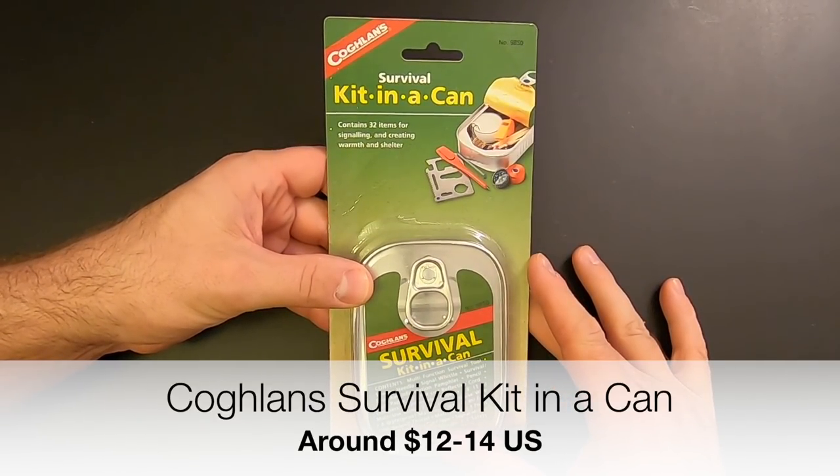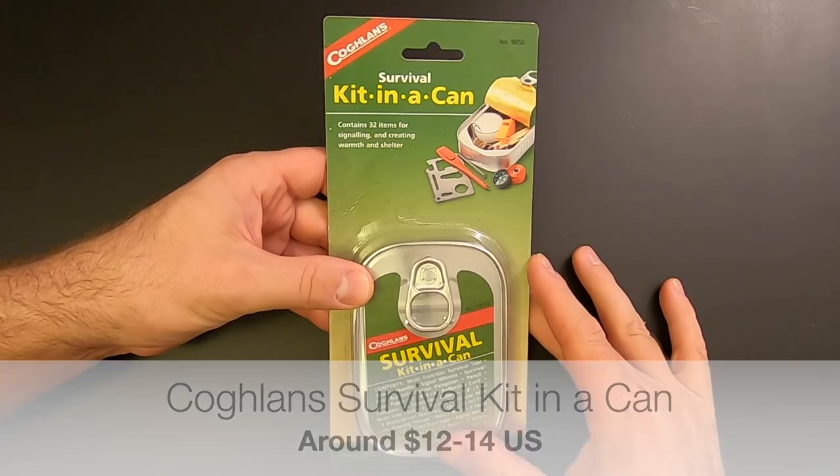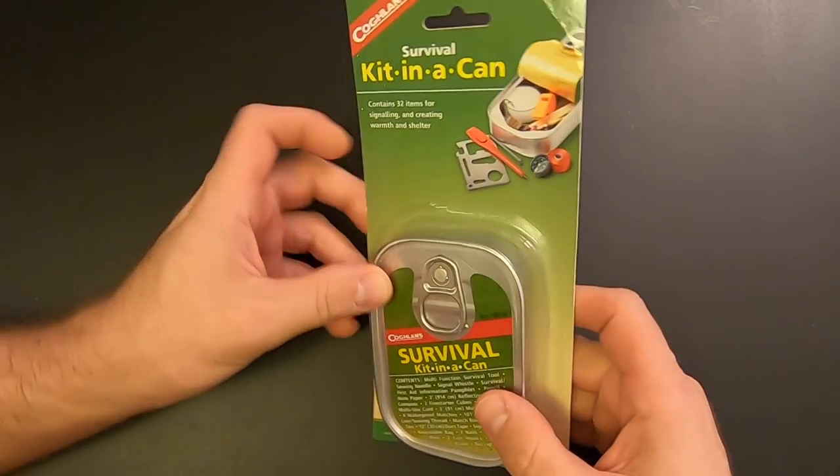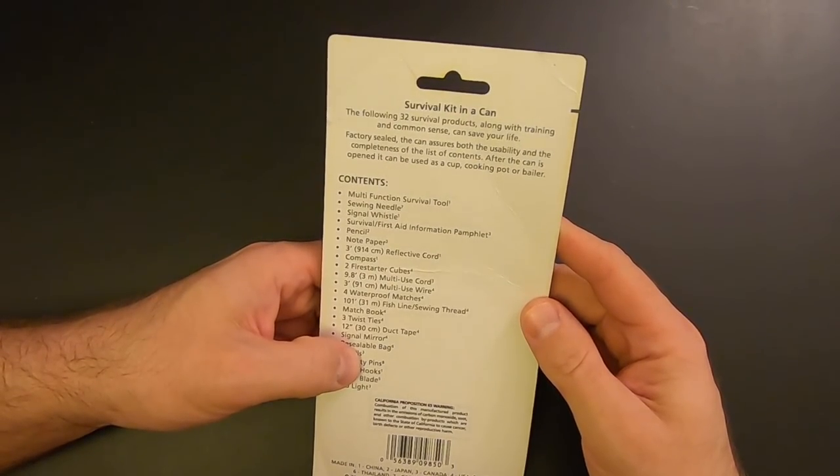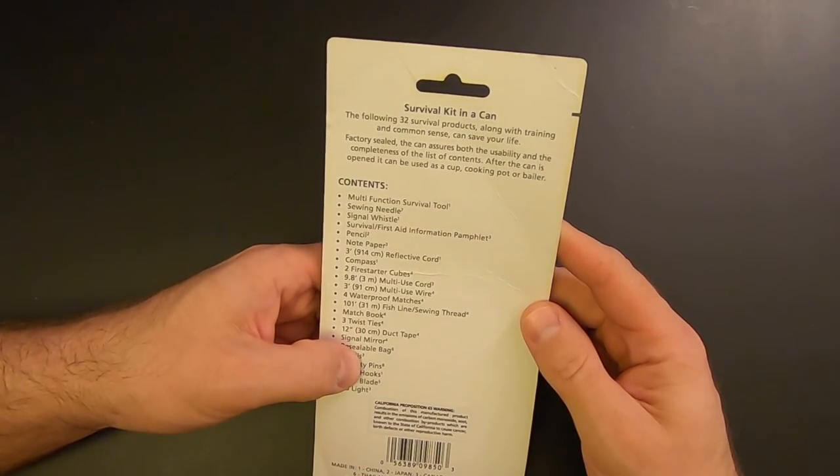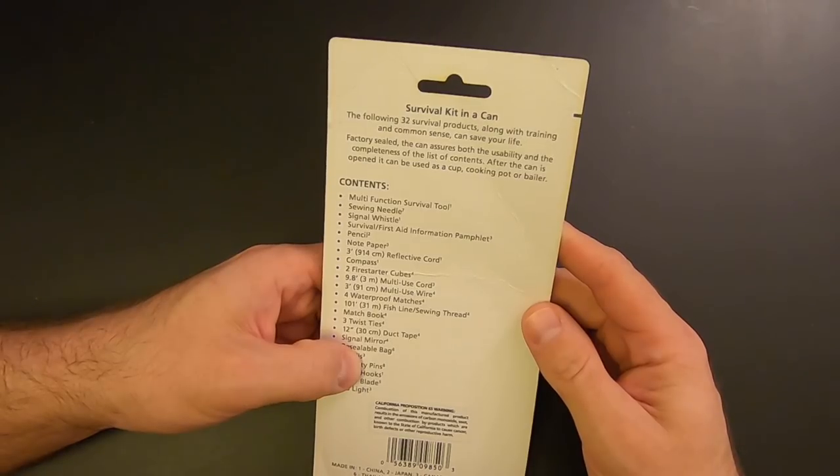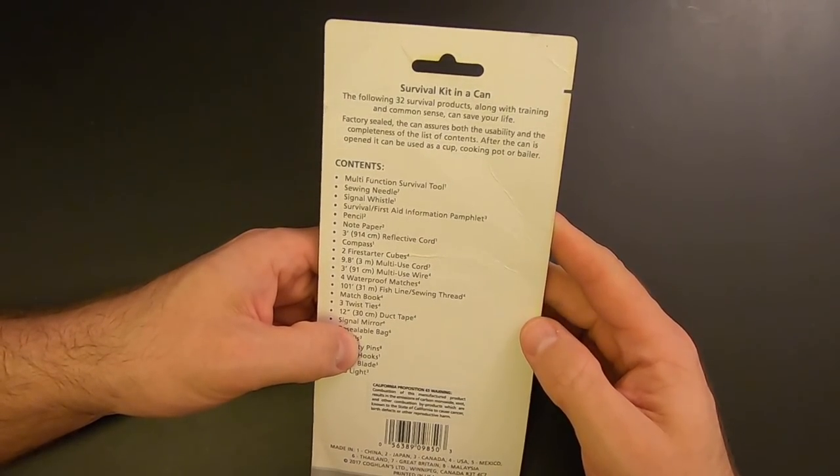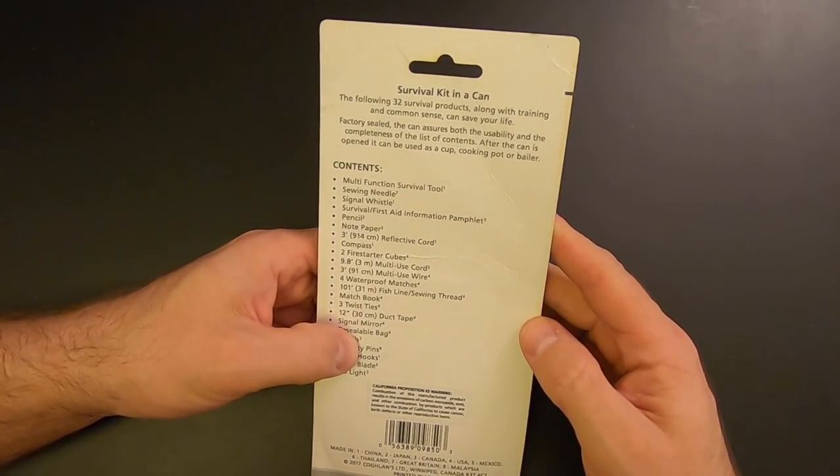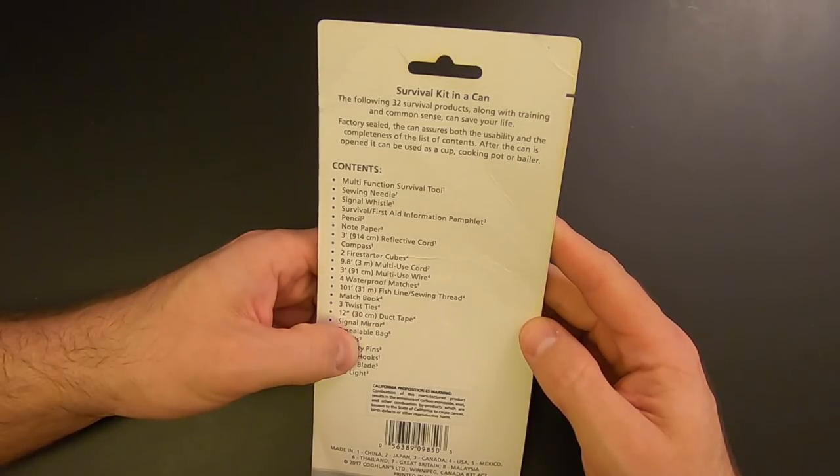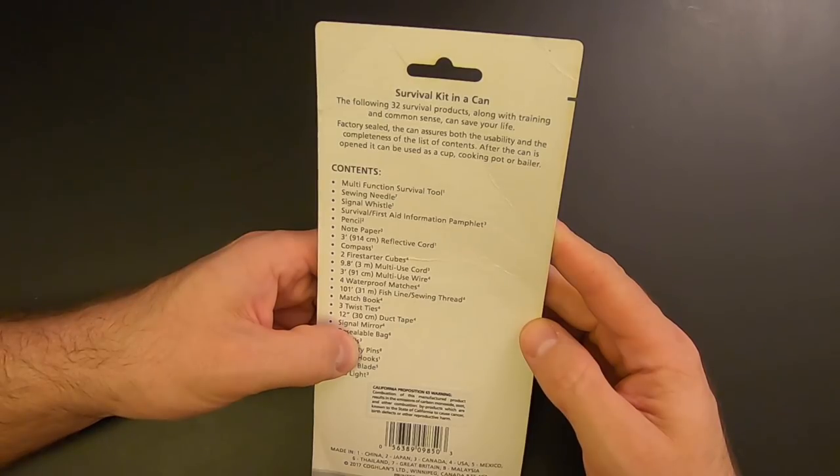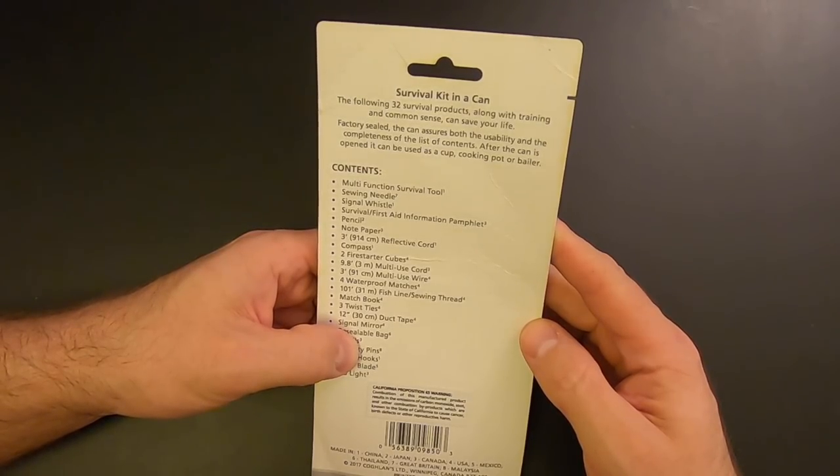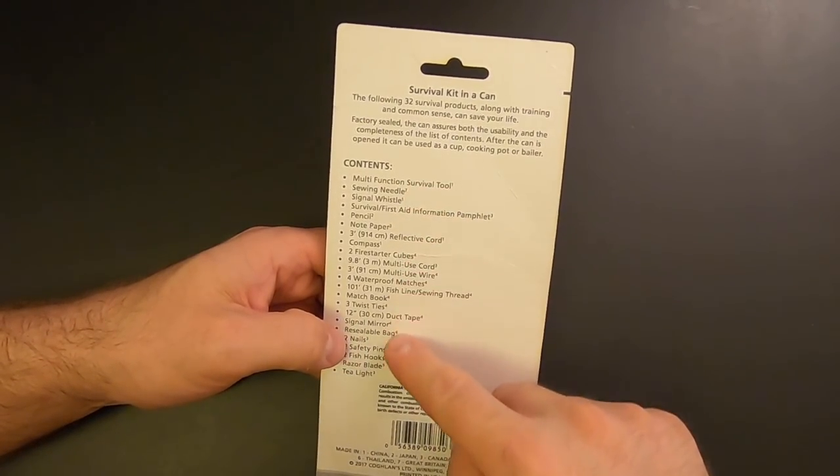Contains 32 items for signaling and creating warmth and shelter. And then on the back, the following 32 survival products along with training and common sense can save your life. Factory seal, this can assures both the usability and the completeness of the list of contents. After the can is opened, it can be used as a cup, cooking pot, or baler.